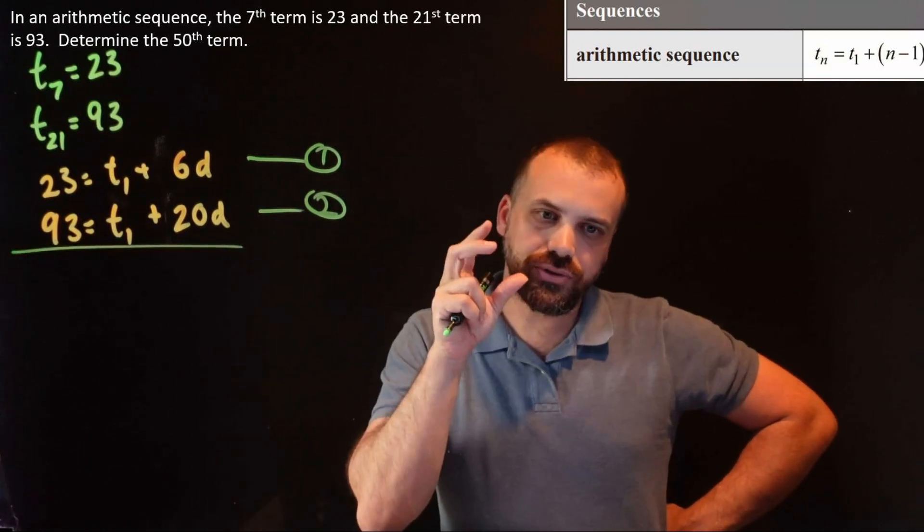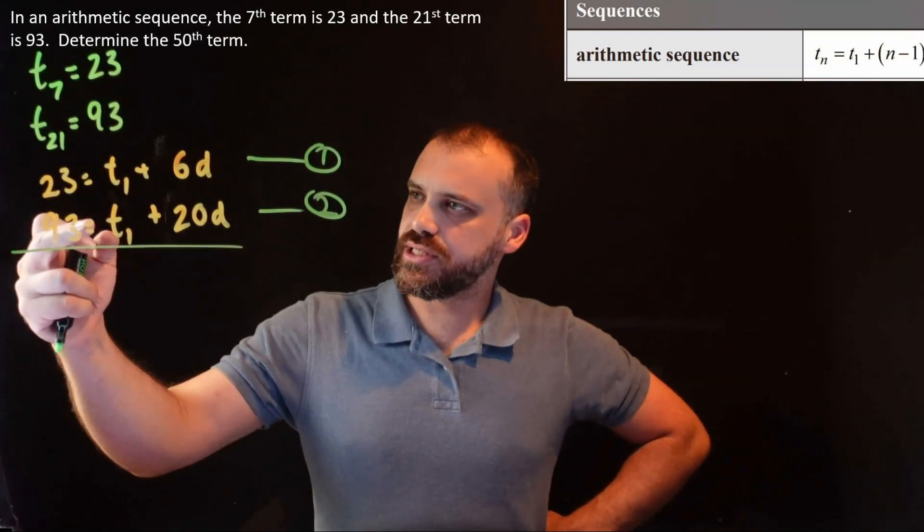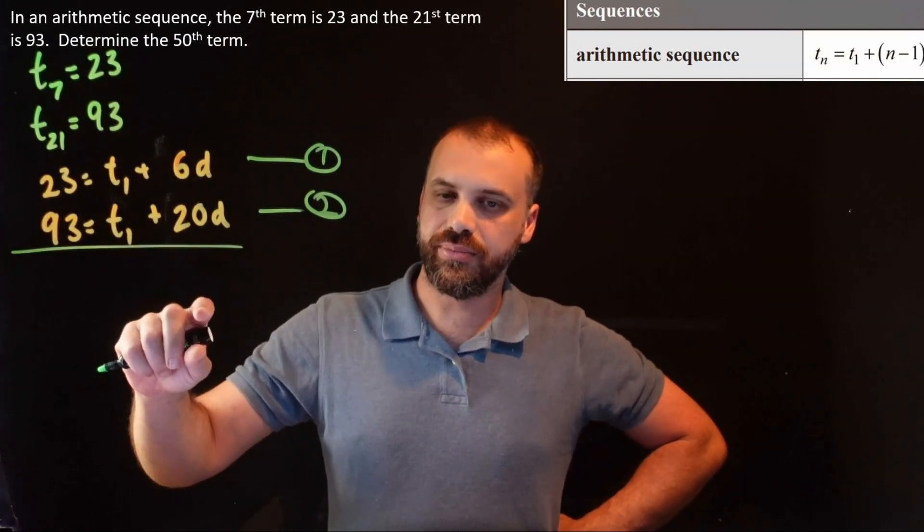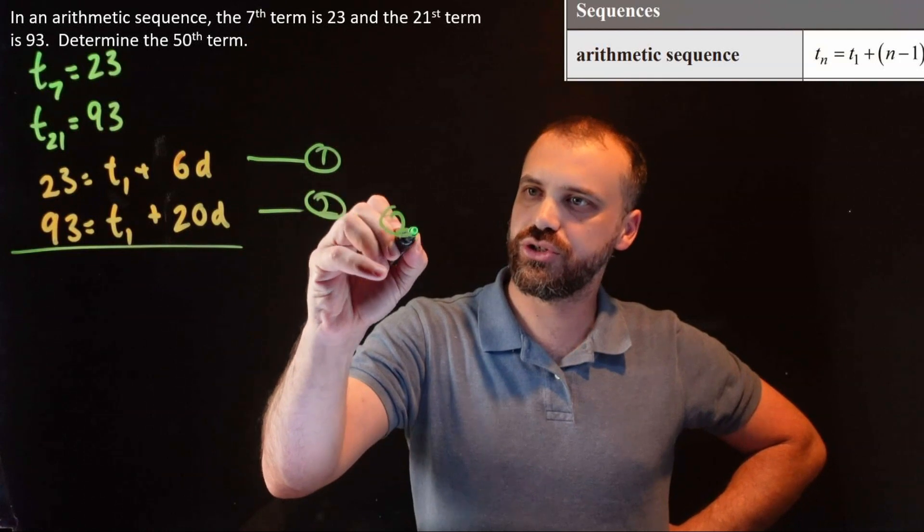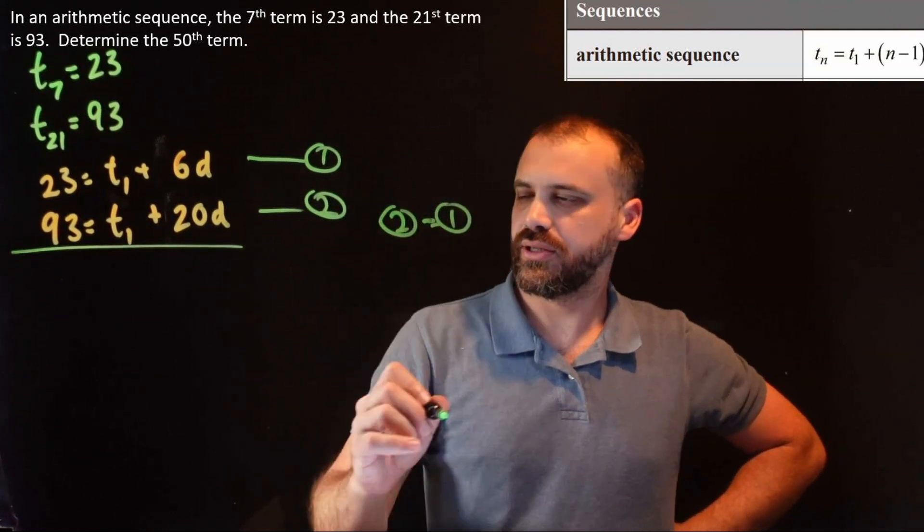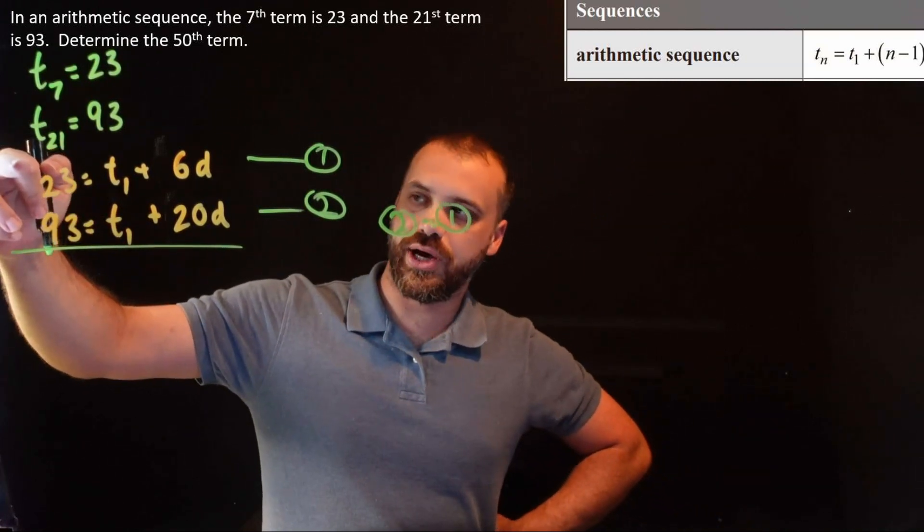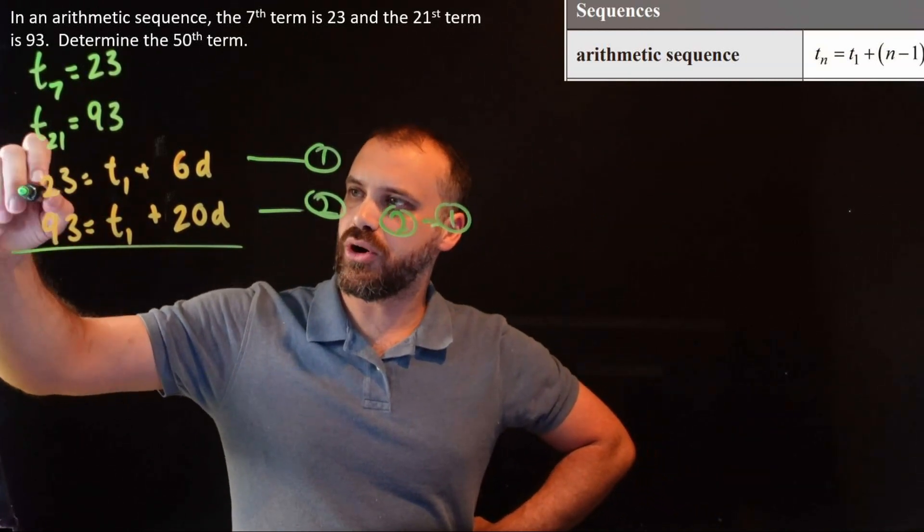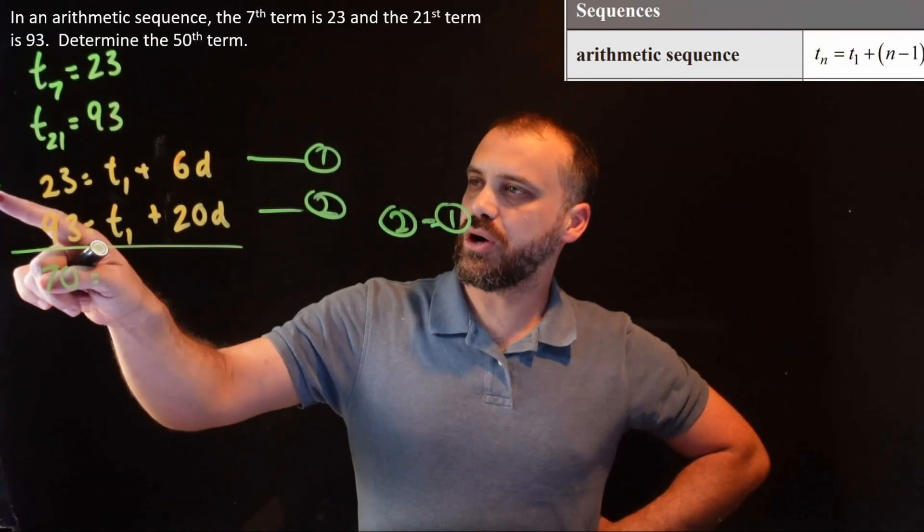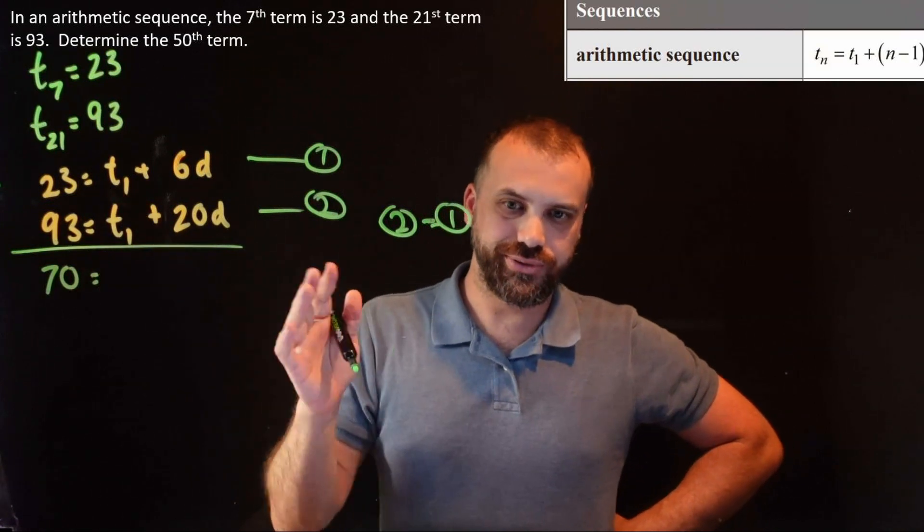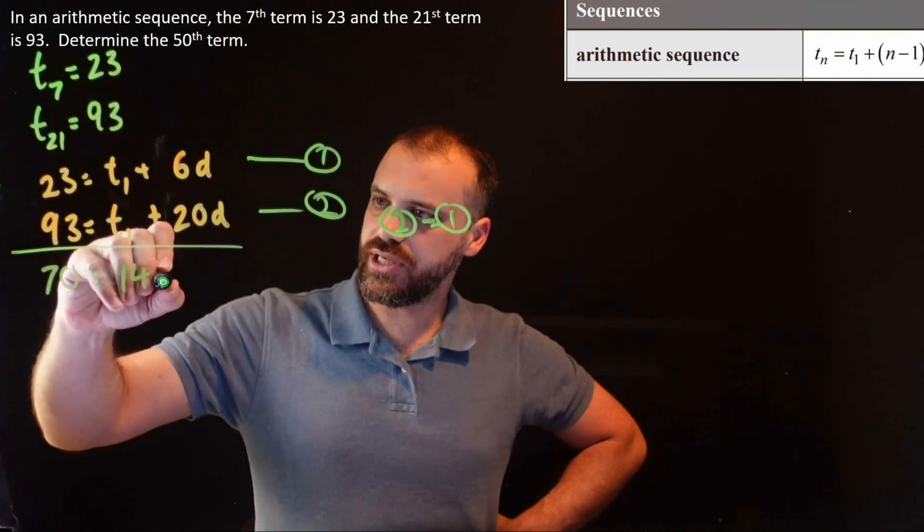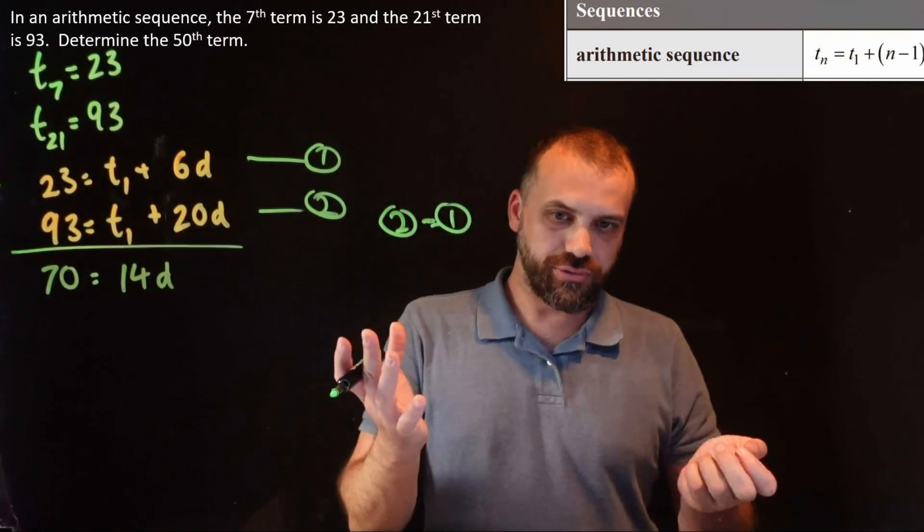Now, I'm going to do something a little odd here because I see that this number is larger than this and this number is larger than this. I'm going to subtract. I'm going to do equation 2 minus equation 1. So equation 2 minus equation 1, 93 minus 23 is 70. T1 minus T1, 0, goes away. 20d minus 6d, that's 14d.